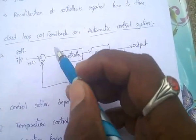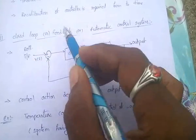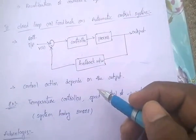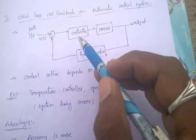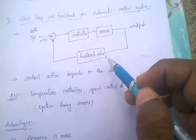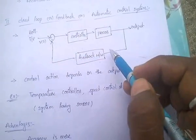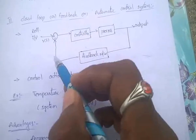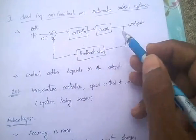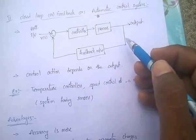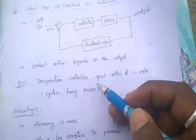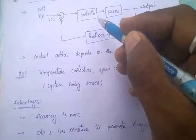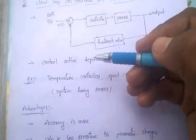Closed loop control systems are also called feedback control systems or automatic control systems. Here, a feedback network is connected between the output and the input, so the control action depends upon the output. Examples of closed loop control systems include temperature controllers and speed control of motors — systems having sensors.